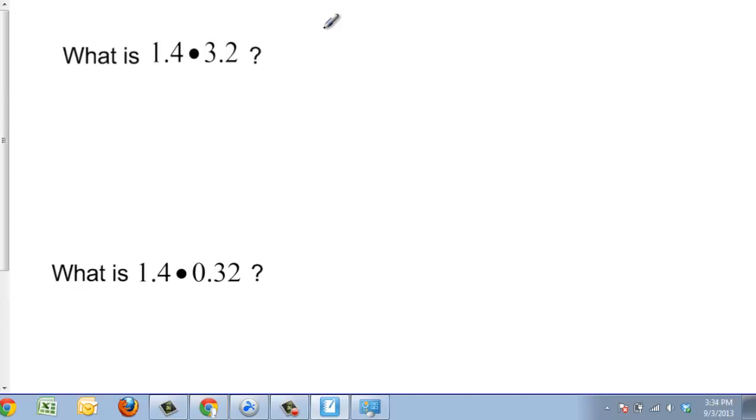If I was to do the first problem, remember we're just going to write this out, 1.4 times 3.2. I am going to simply ignore the decimal points and multiply this out.